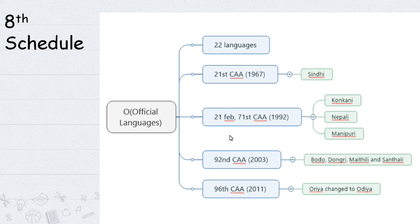Originally at the time of Constitution adoption, the Eighth Schedule had 14 languages. The 21st Constitutional Amendment in 1967 added Sindhi. The 71st Constitutional Amendment in 1992 added Konkani, Nepali, and Manipuri - bringing the total to 18 languages.